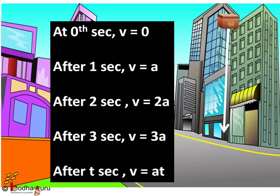After 1 second its velocity is a because velocity is increasing by a every second. After 2 seconds its velocity increases to 2a. At third second its velocity increases to 3a.